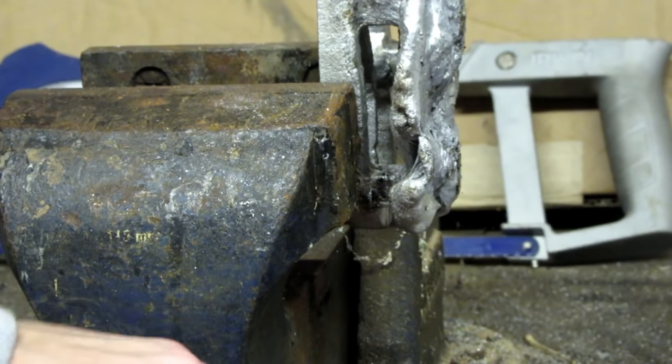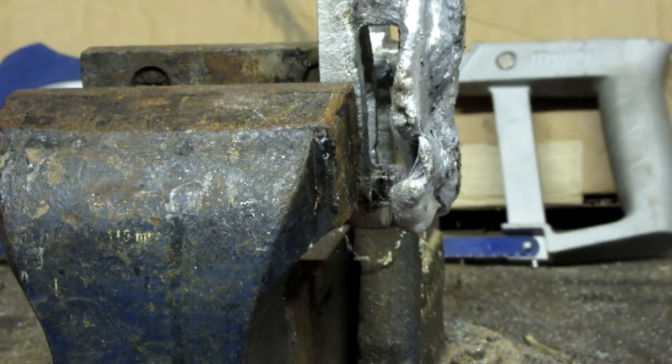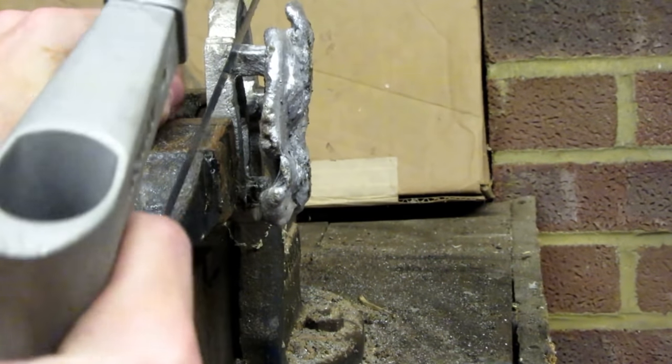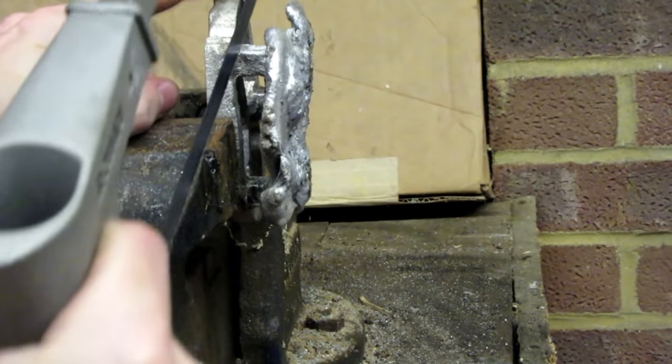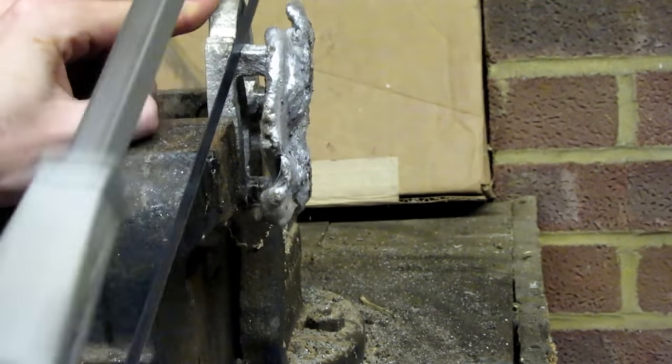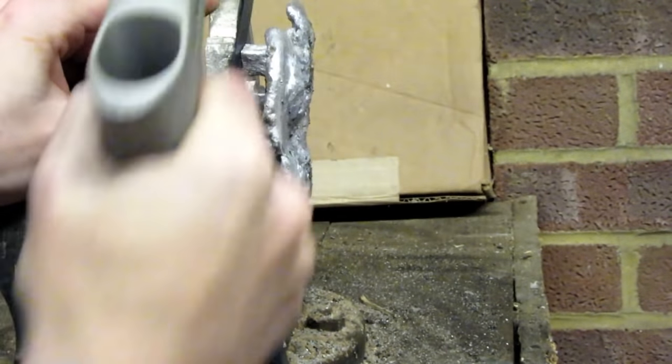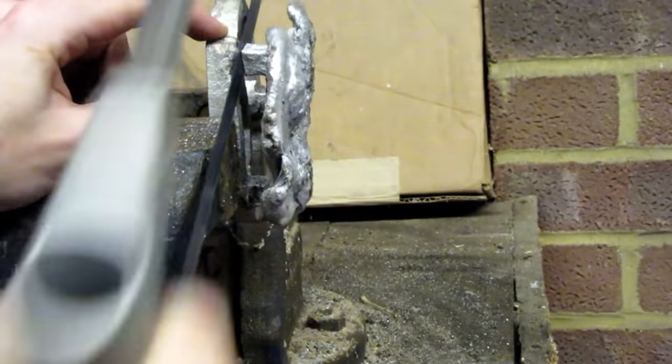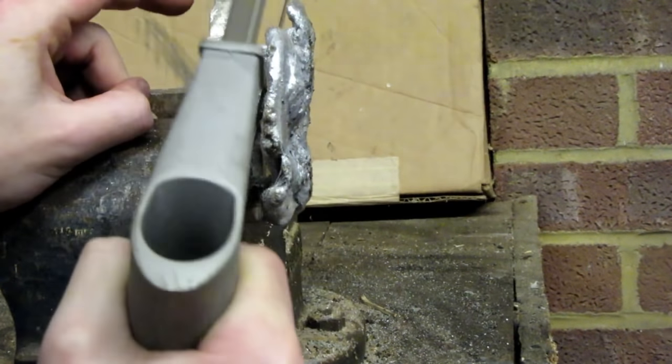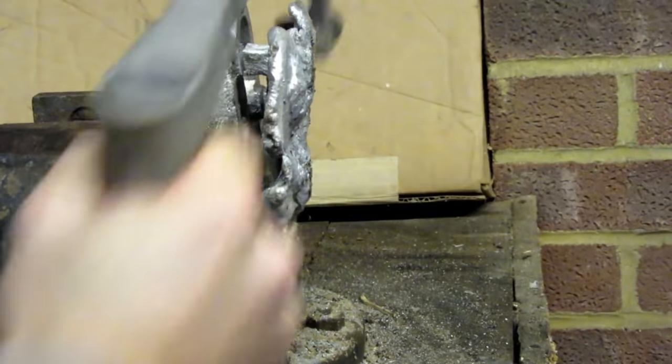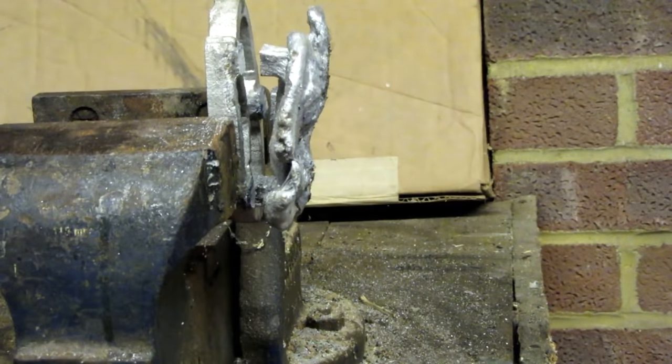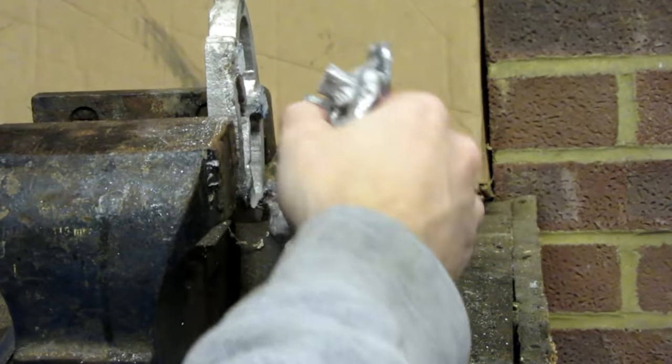I then clamp the castings into a vise and remove the sprues with a saw. Once the last sprue is thin enough, we can give it a few twists and it comes right off.